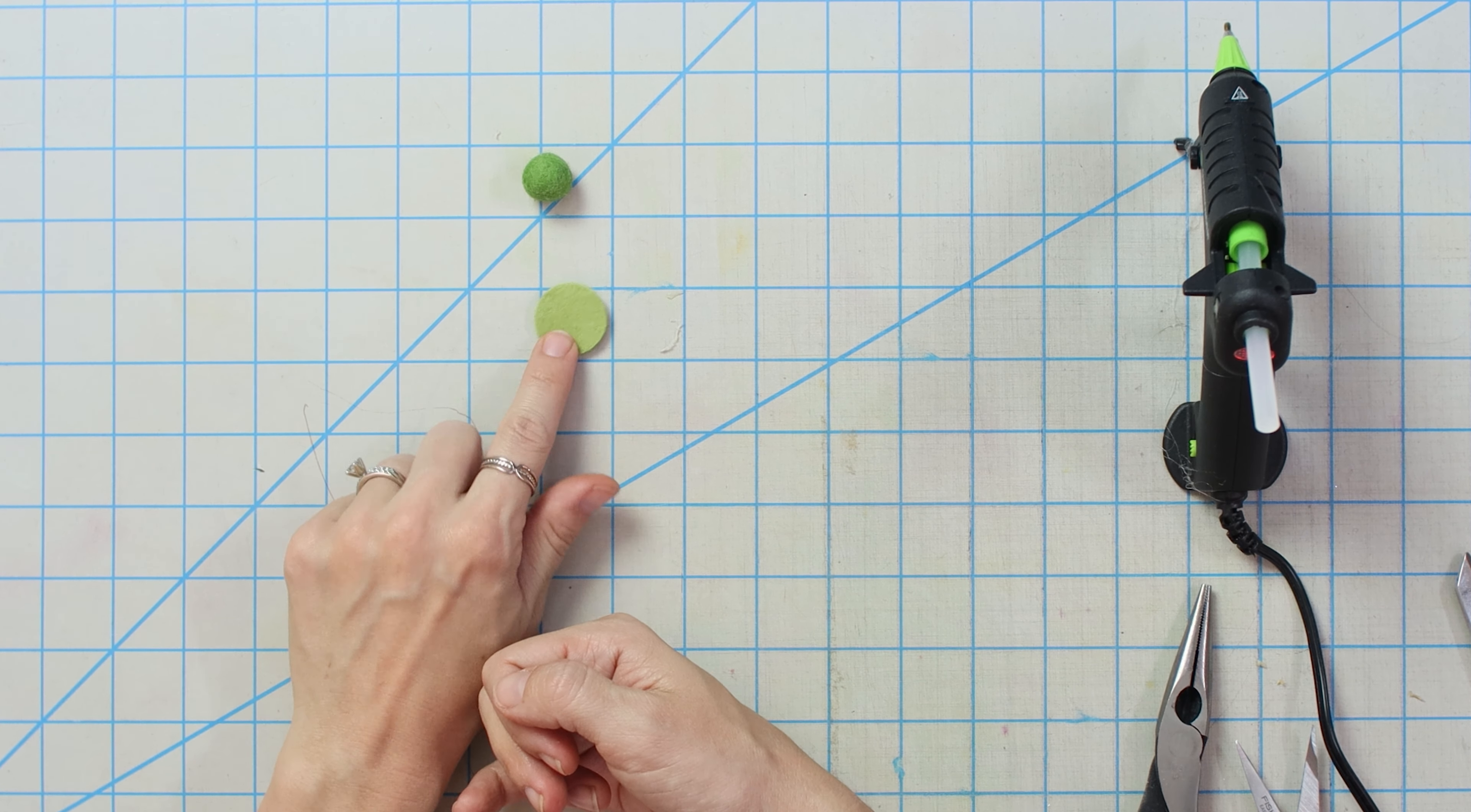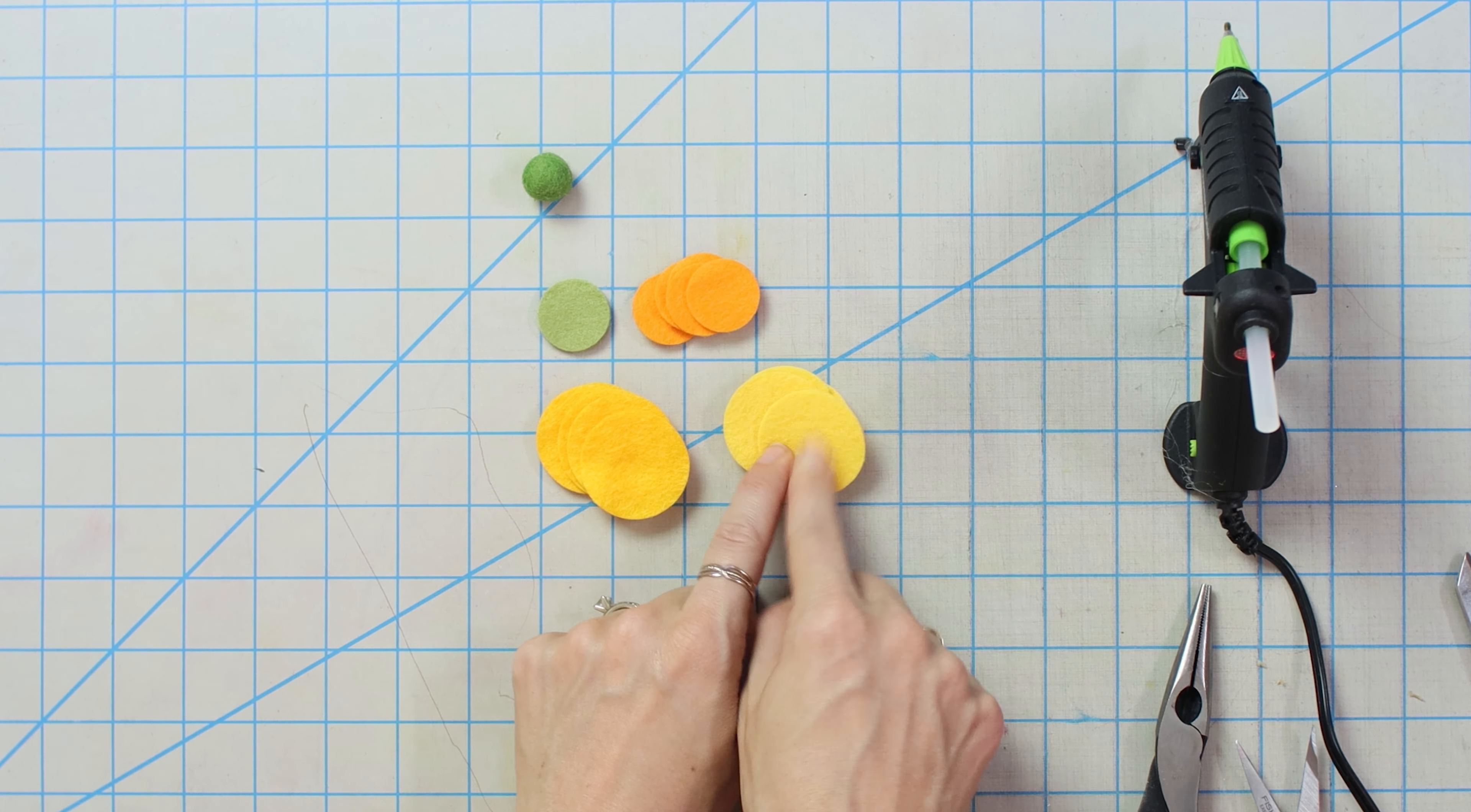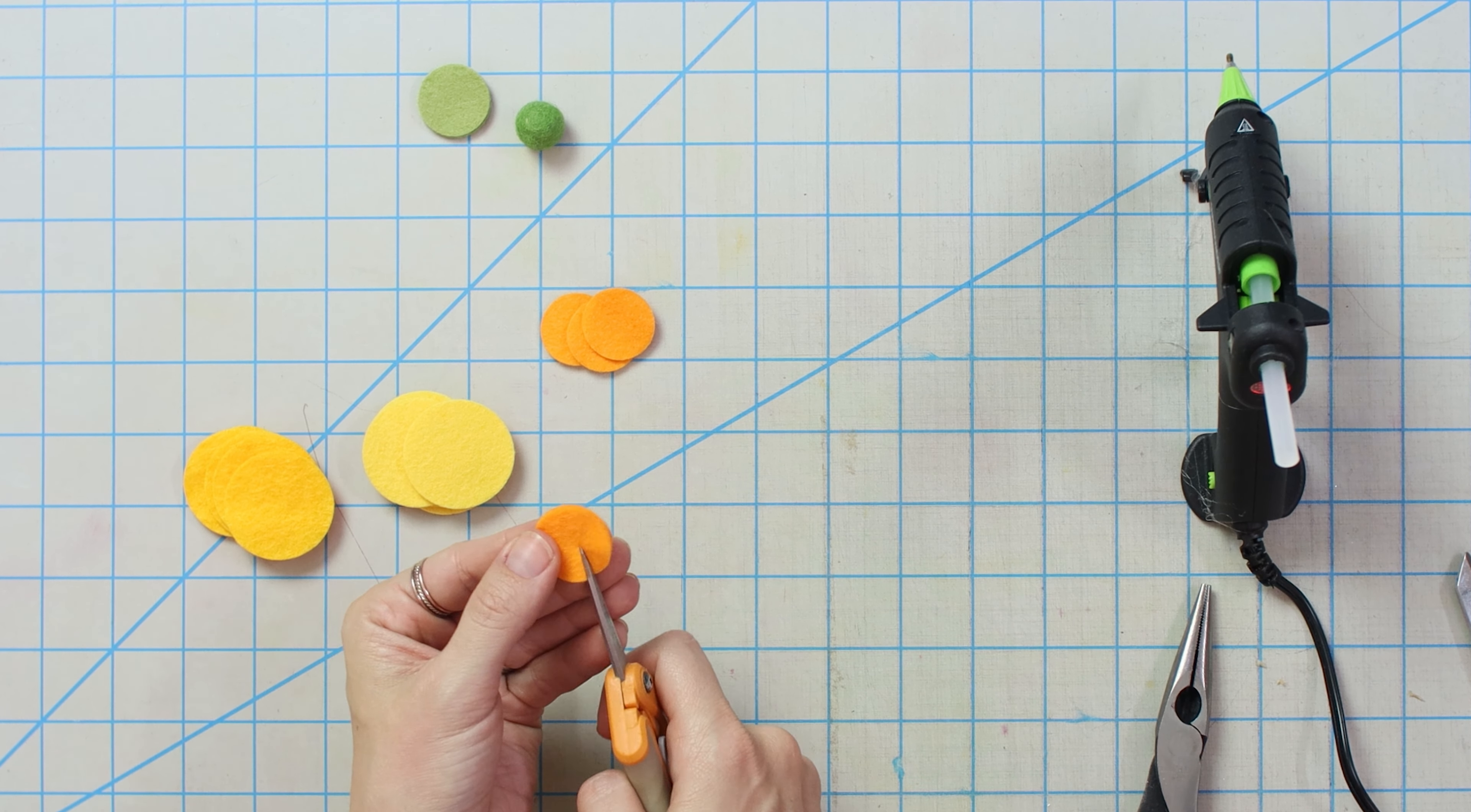Alright, next up we're going to go ahead and make our mini ranunculus flower. Let's talk about what we need. So we have a 15 millimeter felt ball in green. I've got two one inch circles in green. I've got five orange one inch circles. I've got six one and a half inch circles in tangerine and six one and a half circles in sunshine.